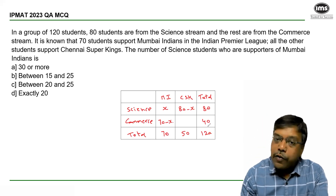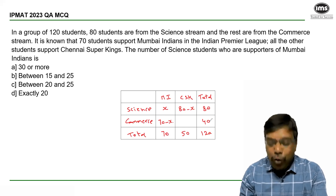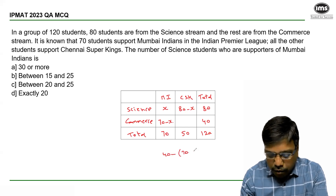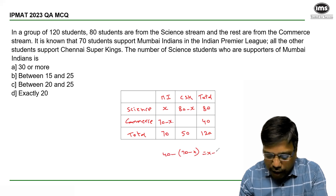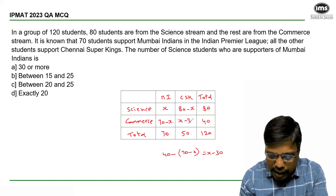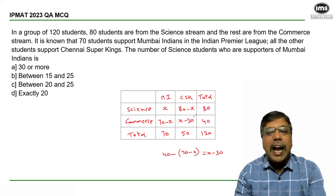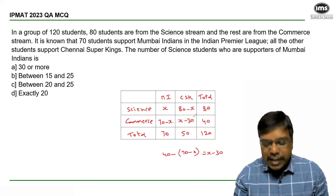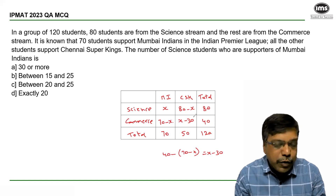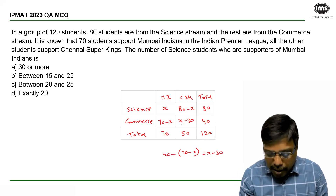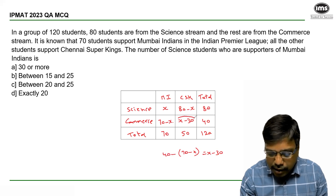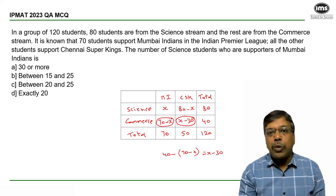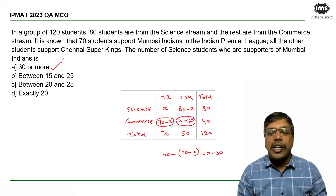The total number of commerce students is 40. Out of them, 70 minus X support Mumbai Indians, which means the remaining 40 minus (70 minus X), that is X minus 30, will be the number of students who support Chennai Super Kings and are from commerce stream. Since all values in the table represent number of students, they cannot be negative. Therefore, the minimum value of X must be 30 and the maximum value of X can be 70. So the suitable option is A, where it says that X can be 30 or more.